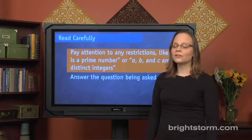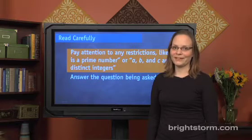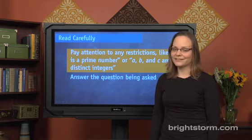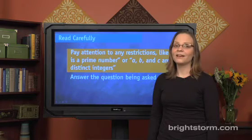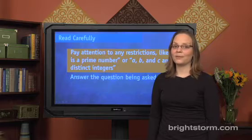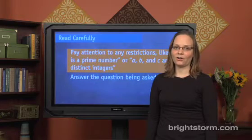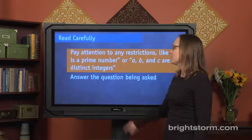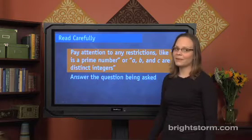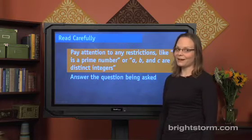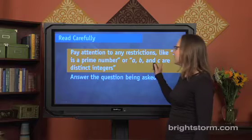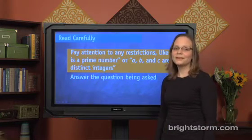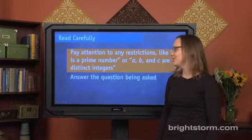First of all, it is so important to read carefully on the math section. I'm not saying that this is a strategy for rocket scientists, but so many points are lost by students reading the question wrong or not answering the right question. Keep in mind any restrictions — if you're told you're dealing with a prime number, make sure you're dealing with a prime number. Or if A, B, and C have to be distinct integers, don't make them the same as each other.